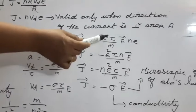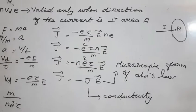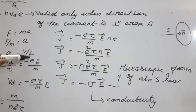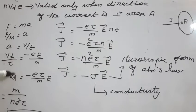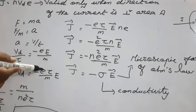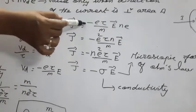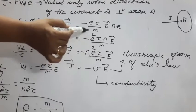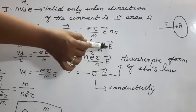From Newton's second law, F = ma, so a = F/m. Also, a = v/t, meaning a = v_d/τ where τ is the relaxation time. Therefore v_d = F·τ/m = −eEτ/m, giving v_d = −eτE/m. Substituting this into J⃗, we get J⃗ = n·e · (−eτ/m) · E⃗, which gives J⃗ = −(ne²τ/m) · E⃗.